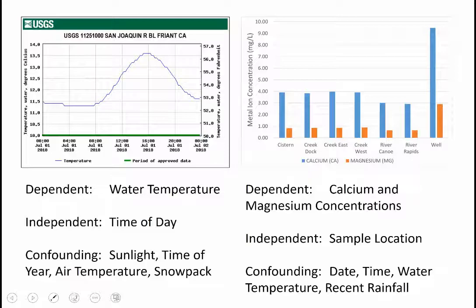The assertion is that the time of day will affect the water temperature that you measure. In this plot, you have the highest water temperature at about 4 p.m. This is data for one day, July 1st in 2018.